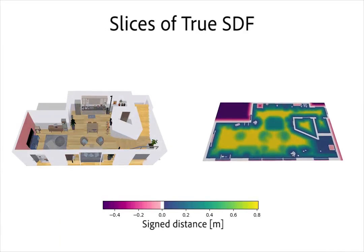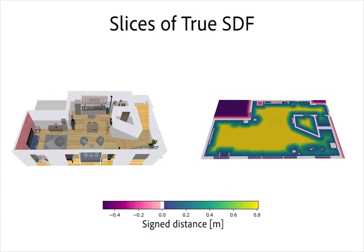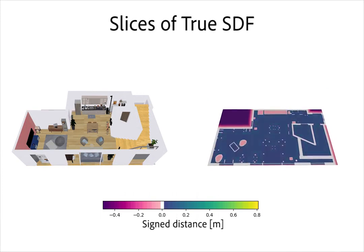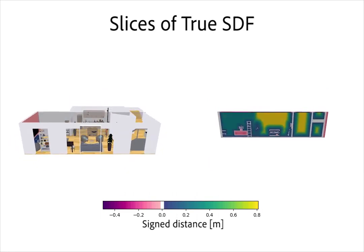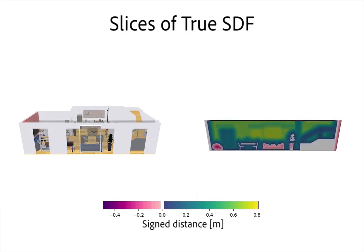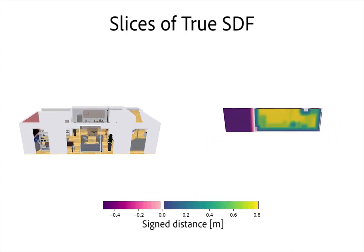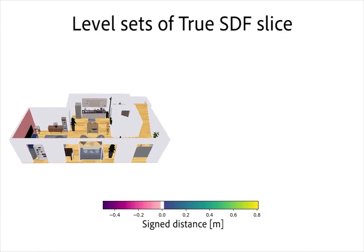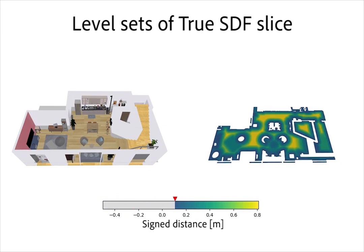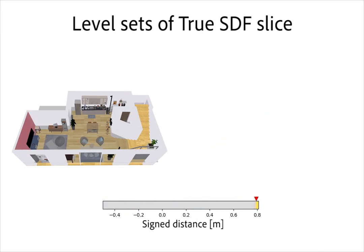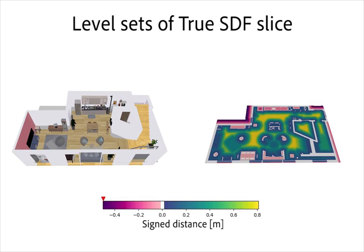Here we show slices of the ground truth signed distance field for the room. The signed distance field maps xyz coordinates to the distance to the closest surface. Positive values outside of surfaces are blue and green, and negative values inside surfaces are pink and purple. Here we are visualizing the level sets in a slice of the field. The surface is encoded by the zero level set.